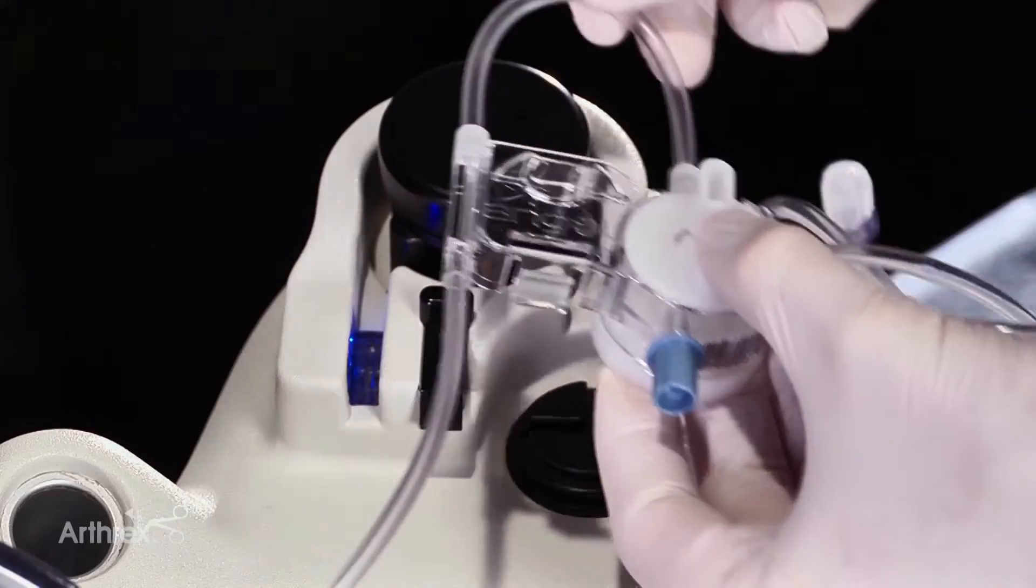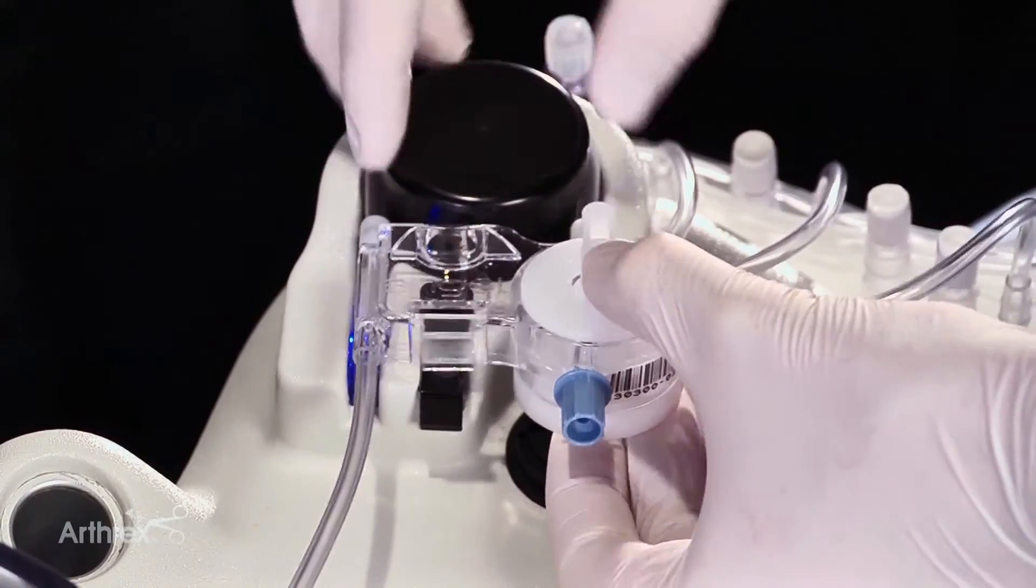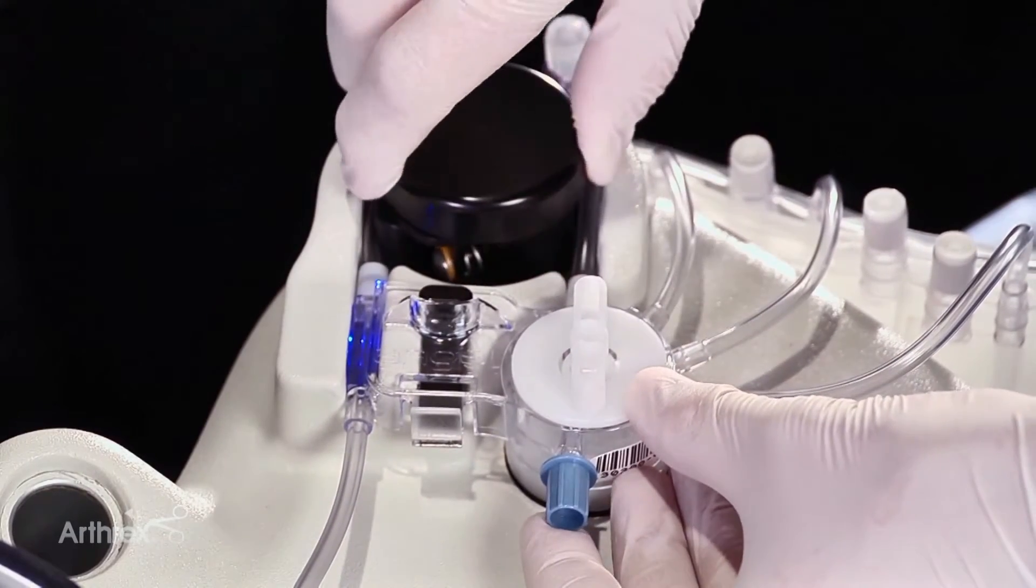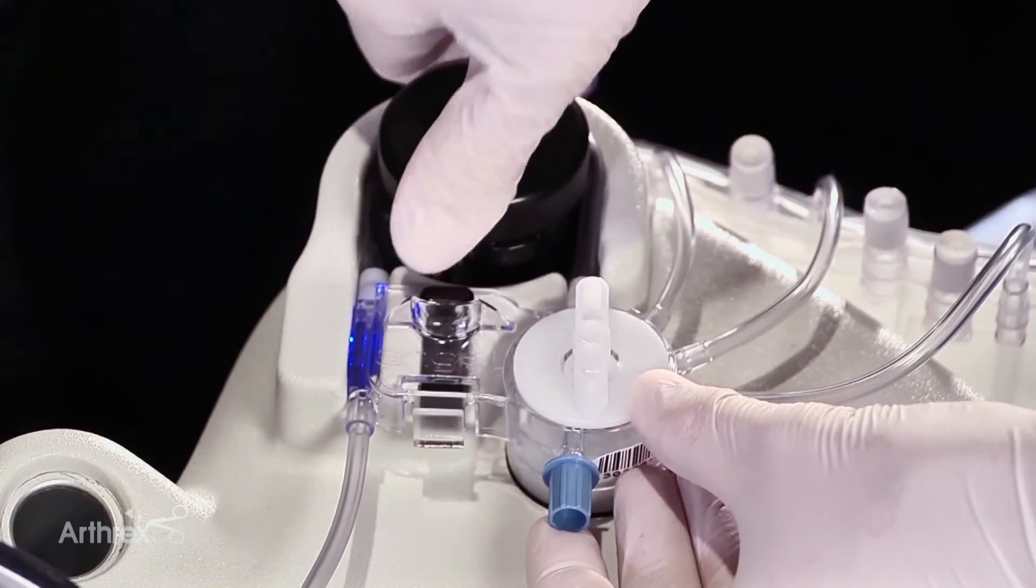Place the tubing over the pump rotor. Seat the valve assembly by aligning it with a valve driver. Press down firmly until the assembly snaps into place. Turn the pump rotor clockwise to seat the tubing.